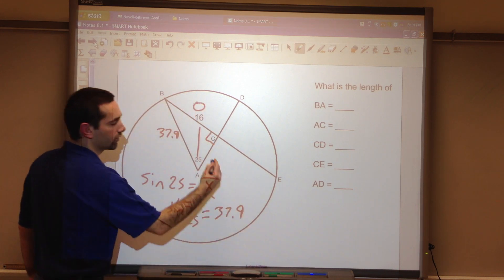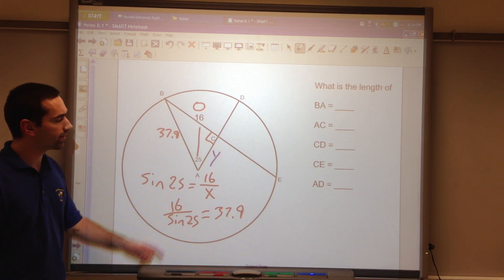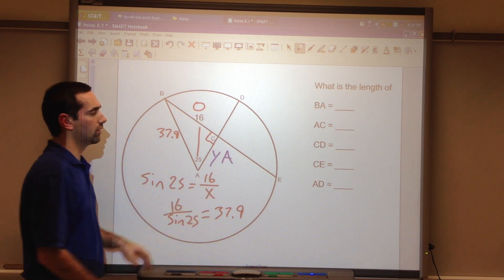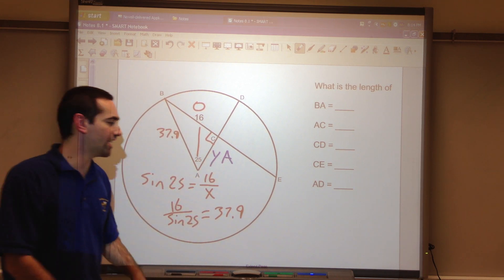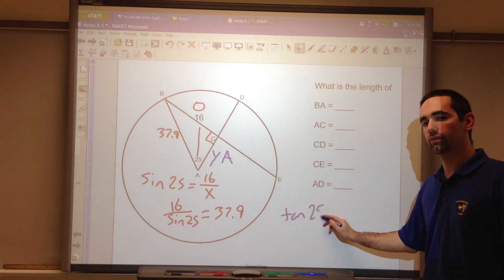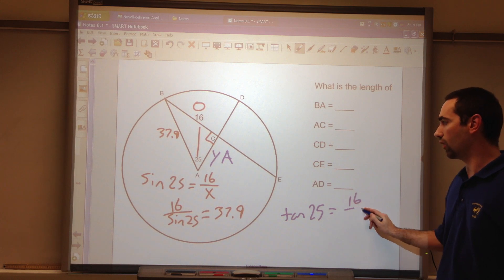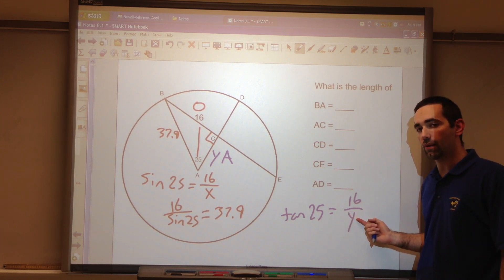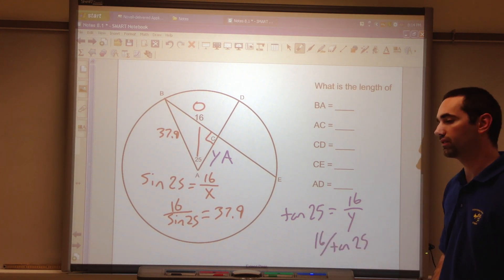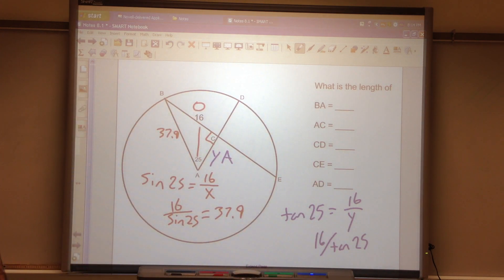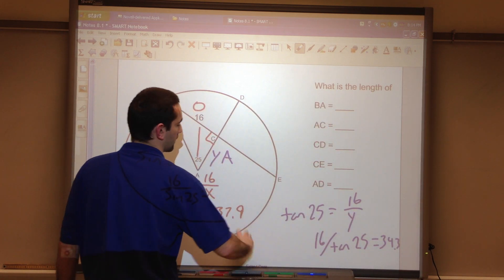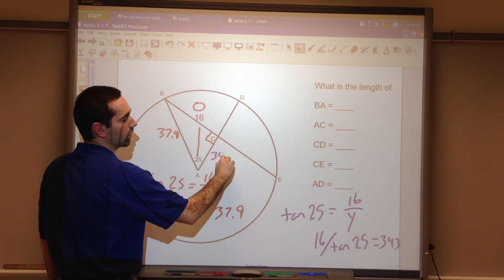But I still need to solve for this length. I'm going to call it Y. Opposite, hypotenuse that we've got. This is the adjacent. OA, TOA, tangent. Tangent of the angle equals the opposite over the adjacent. Y is the denominator. I will divide. 16 divided by tangent 25. From that, I get 34.3.